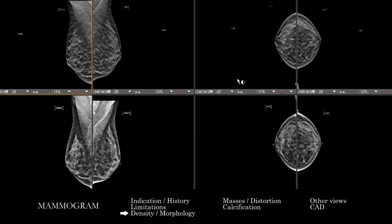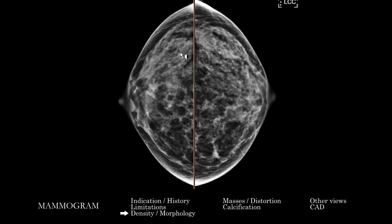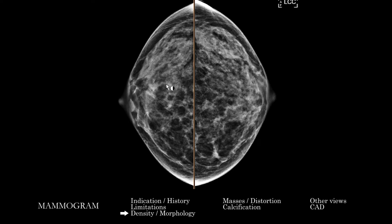As we compare to prior, we're looking for changes in breast density and size. It's also useful, as we go through, to ask ourselves: what's the densest part of each breast on the available views? Breast cancers are frequently — not always — dense. Getting a sense of what is the densest area within each breast can help key you into things you want to investigate further.